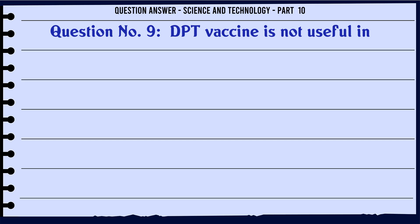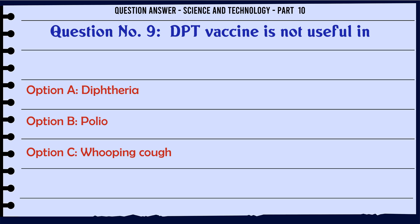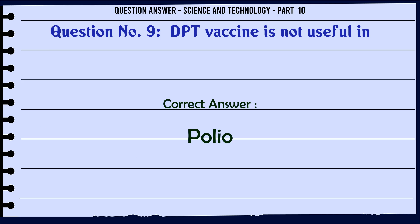DPT vaccine is not useful in. A. Diphtheria. B. Polio. C. Whooping cough. D. Tetanus. The correct answer is Polio.